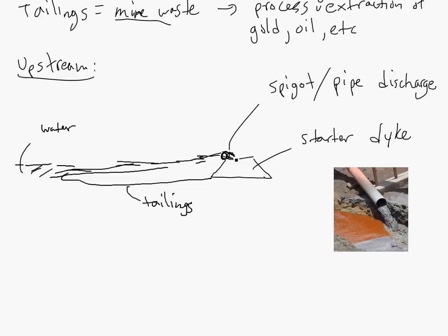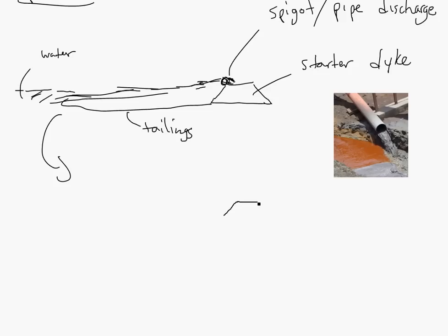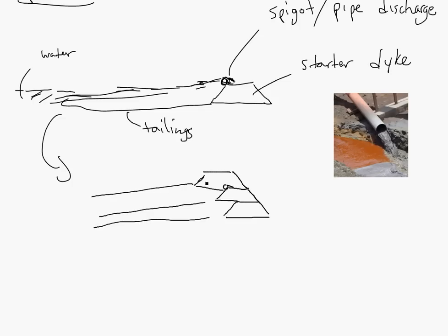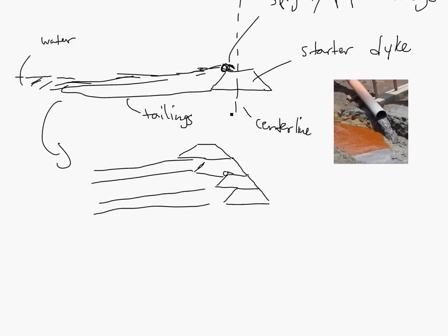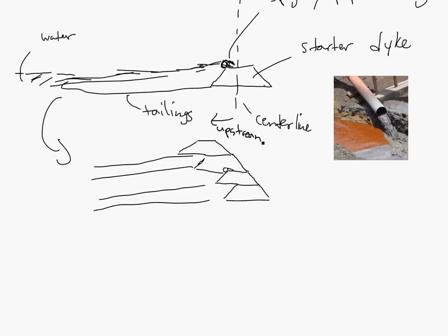As you add more, you also need to increase this. The upstream method means you'll continue and add on top of the starter dike. You move the pipe and spray there, and it keeps getting bigger and bigger. So there's a first layer, then a second, and so on - it keeps building. Upstream and downstream are referenced from the center line. When it's going toward the center it is actually upstream, so that way is upstream.